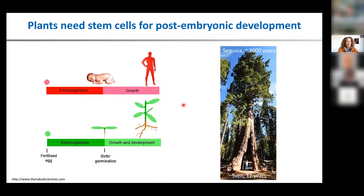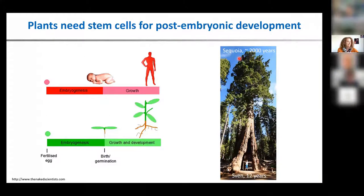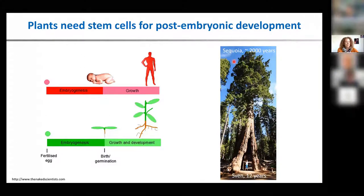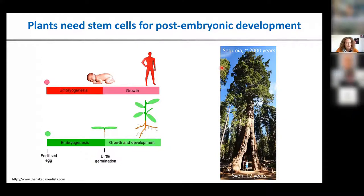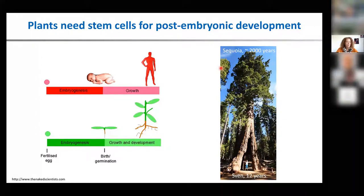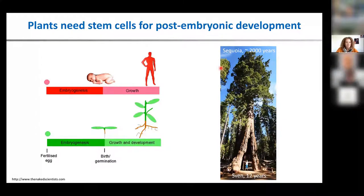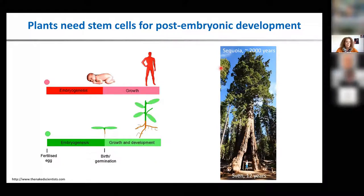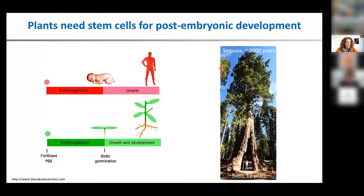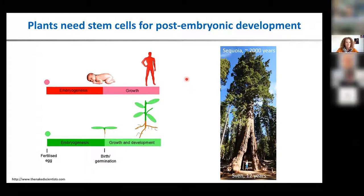A plant life can be very long. This sequoia tree is more than 2,000 years old, and it still produces a lot of organs all the time. Whereas we humans cannot come to this kind of age. So plants are really good at maintaining their stem cells.